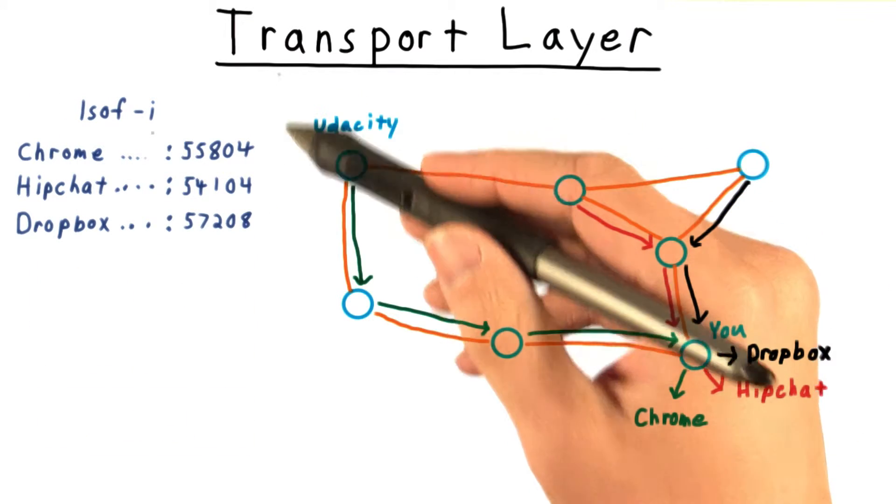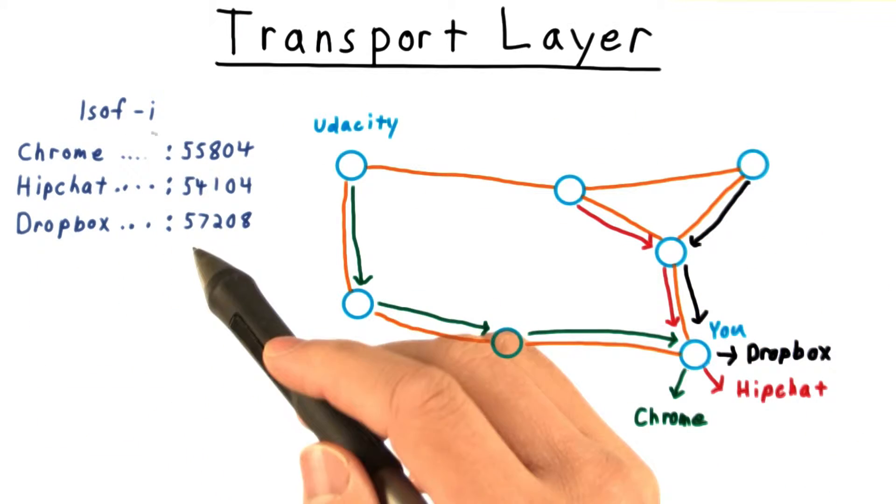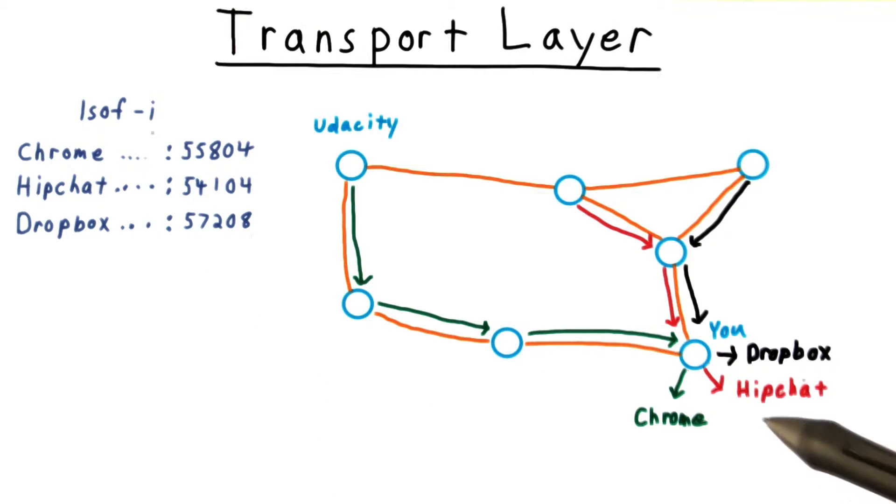On a Linux machine, you can see this mapping using lsof-i. Having multiple ports allows more than one application to receive data from the network at once, something called multiplexing.